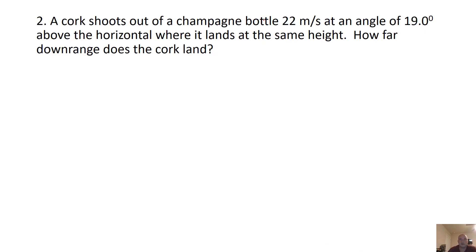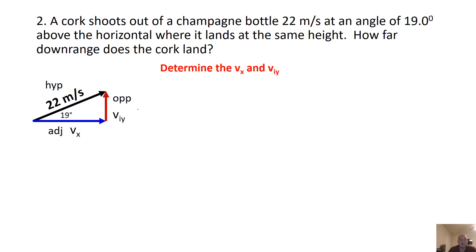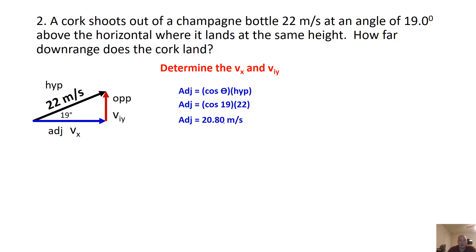The second question is about a cork shooting out of a champagne bottle at 22 meters per second at an angle of 19 degrees above the horizon. We want to find how far downrange the cork lands. Before we consider the question, let's draw a triangle and figure out the VX — the adjacent component. Cosine of 19 times 22 gives us 20.80.